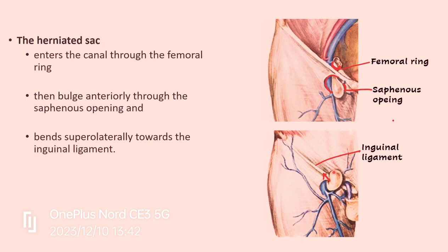This direction must be known because to reduce the hernia — to push the intestinal contents back into the abdomen — you have to apply pressure in the reverse direction. First push inferomedially, then posteriorly, then upwards — in the reverse direction.